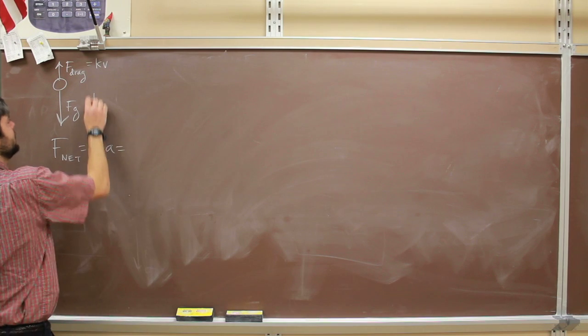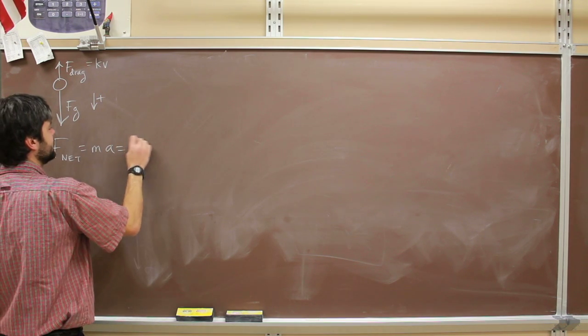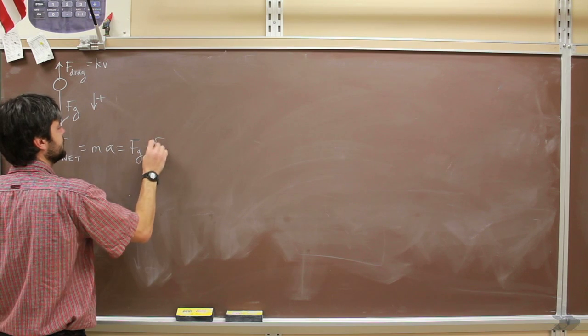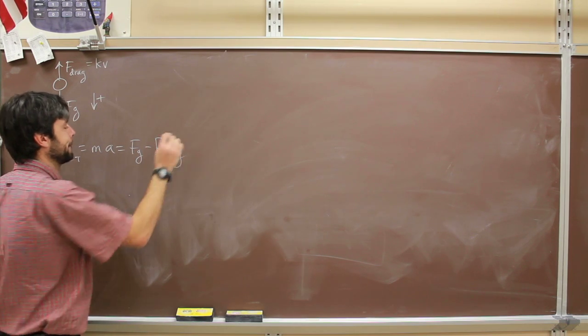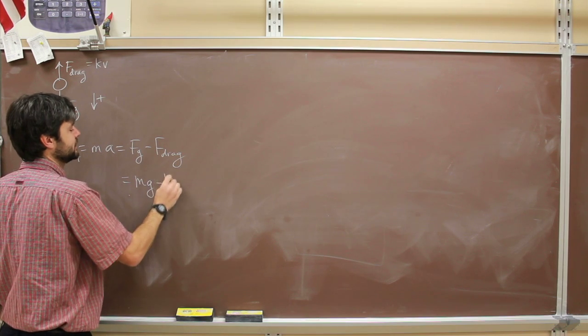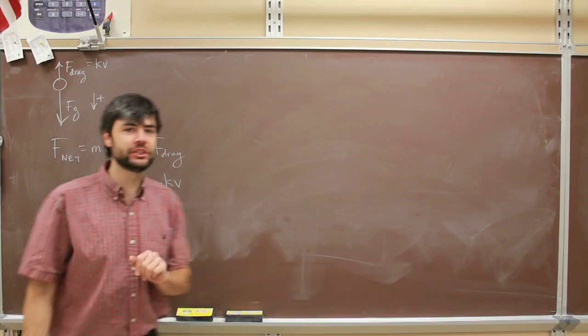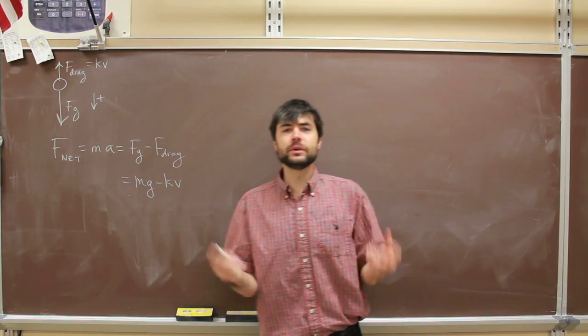F_net equals ma. I call down to be positive, so we have F_g minus F_drag. And that's just simply going to become mg minus kV. And my acceleration is changing with time.